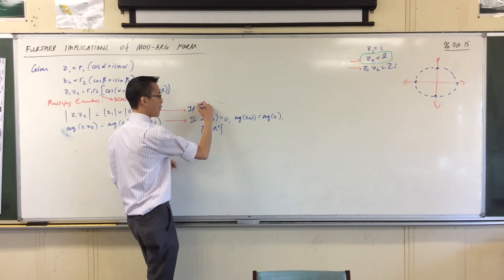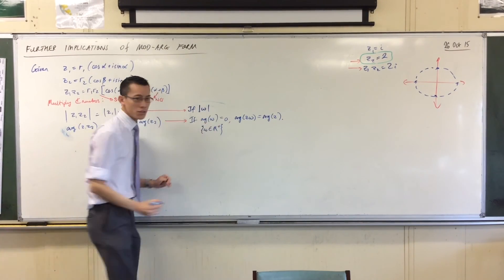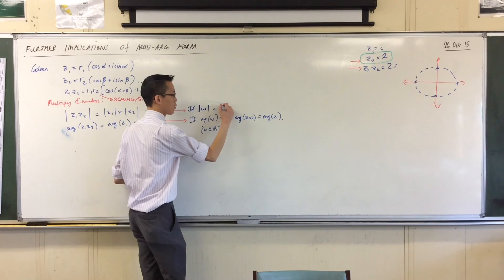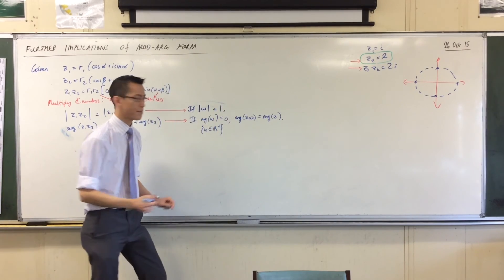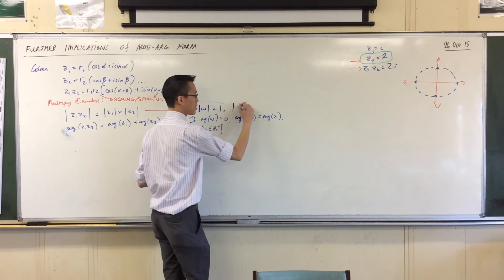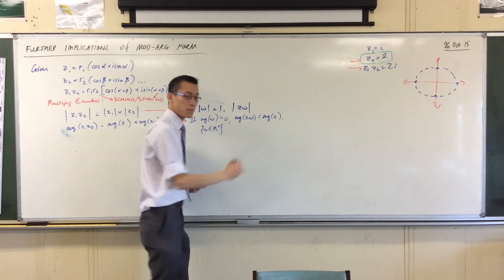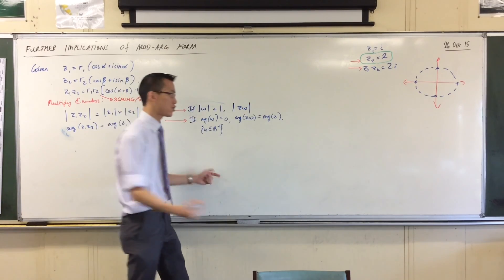So I'm gonna say if the modulus of omega is equal to one, then the modulus of any number multiplied by omega won't change.